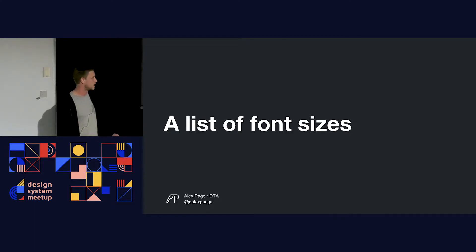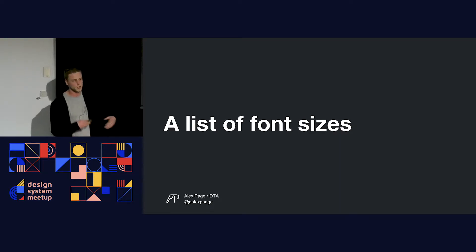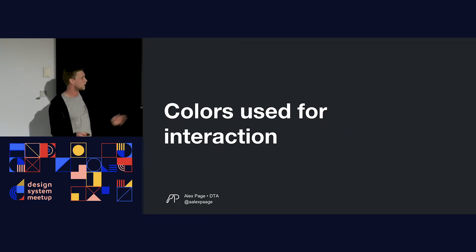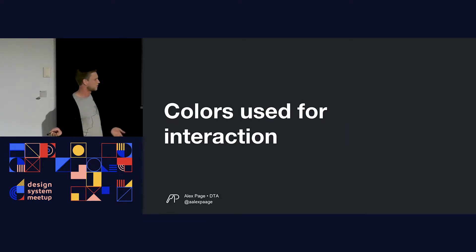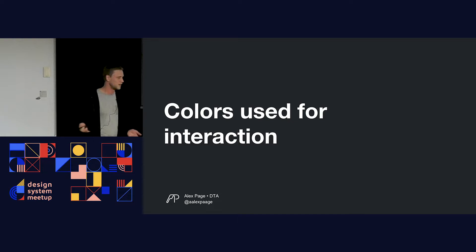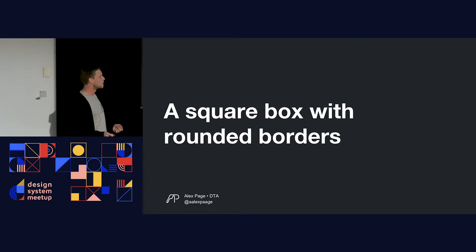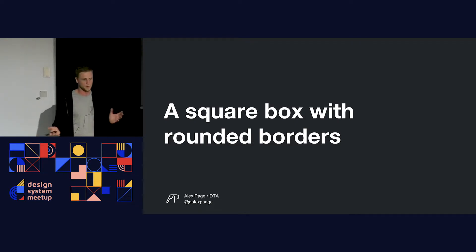Some things we've had to name: a list of font sizes — trying to be practical, let's call it AU font sizes. Colors used for interaction — AU color action. We have foreground and background colors. A square box around corners — it's a card. Everyone's sort of familiar with these patterns.